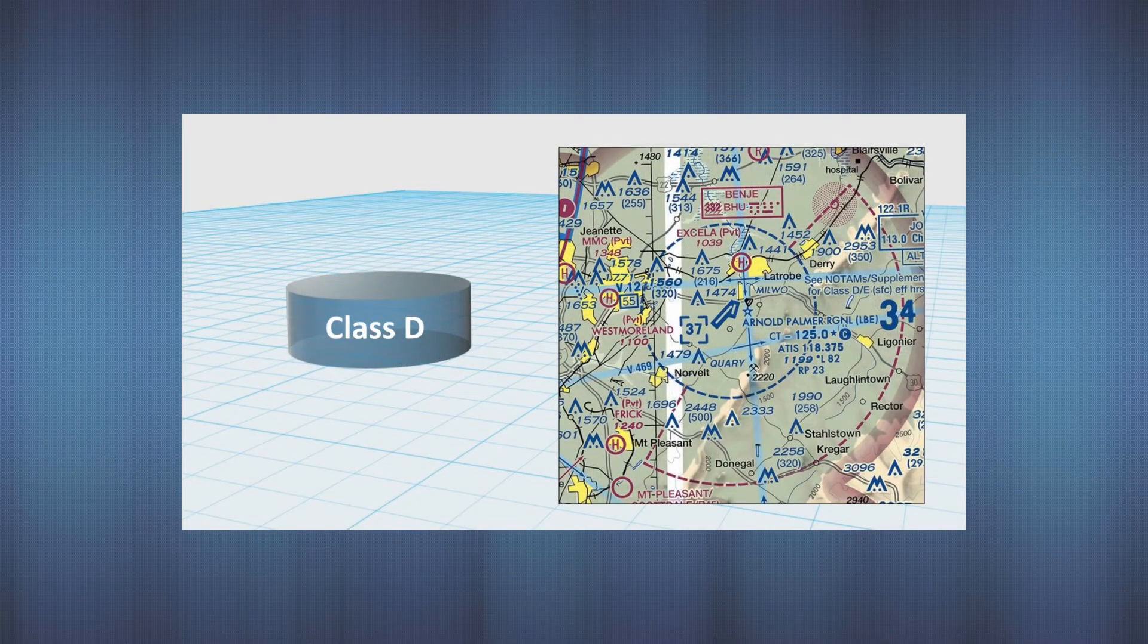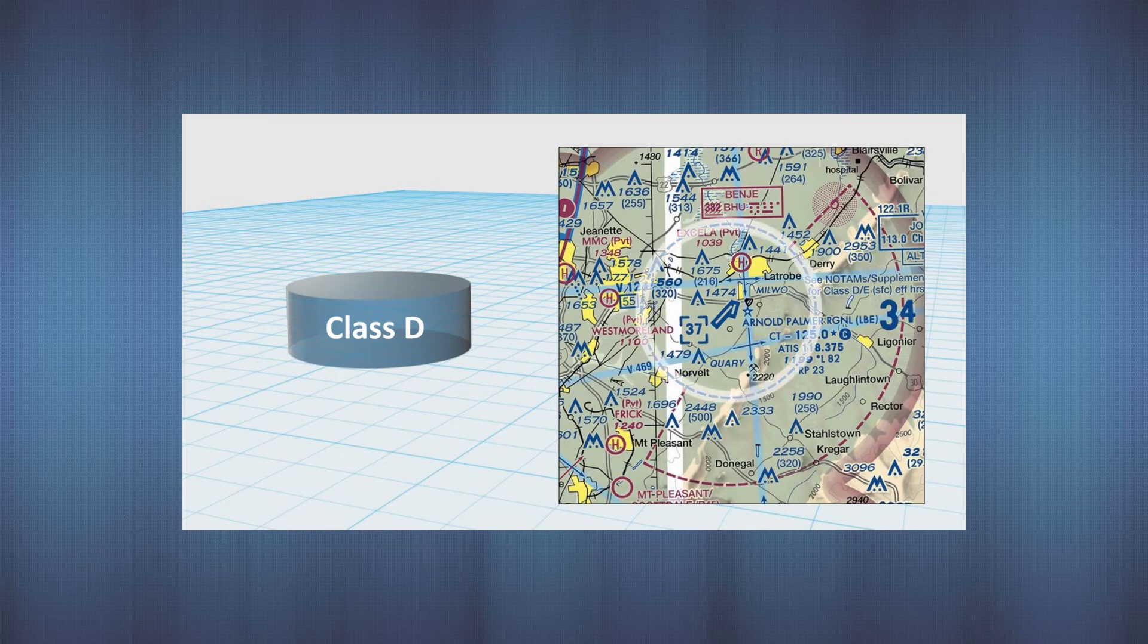Our third airport airspace is Class D. These surround towered airports that tend to be on the smaller side, although there are plenty of Class Delta airports that are larger than some Class Charlies. There are no shelves or layers in Class D, just a surface area usually shaped like a cylinder or a drum. They're normally round, but like with any airspace, they are sometimes irregular in shape. They are outlined by dashed blue lines.